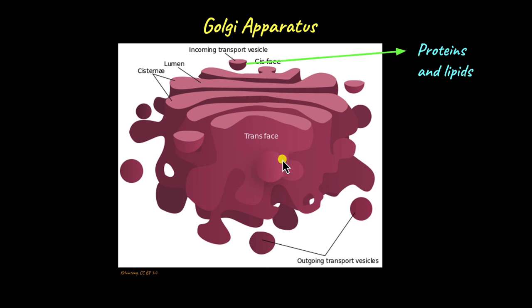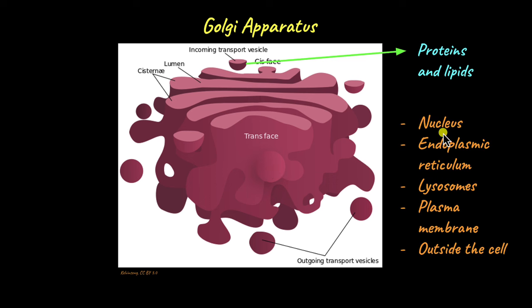The vesicles also know the address of the protein and lipid, and they are transported to different parts of the cell like the nucleus, endoplasmic reticulum, lysosomes, about which we will learn in another video, plasma membrane, or even out of the cell. Those proteins or lipids called secretory proteins and lipids are transported by the secretory vesicles.